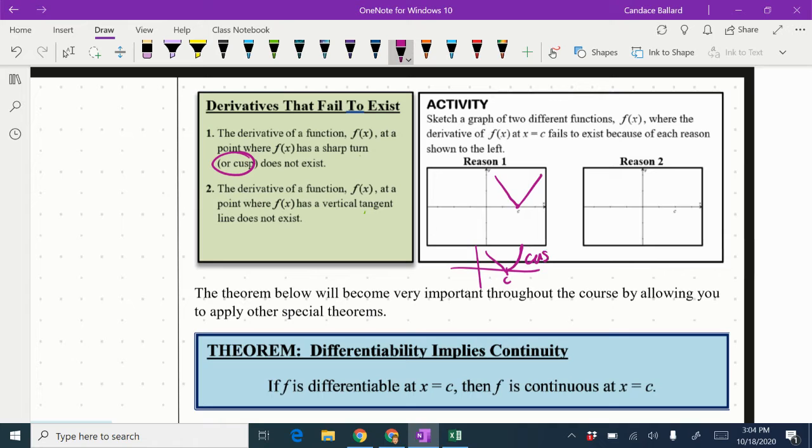This is more of a cusp, whereas this one is a corner. And then on the second graph here, it says we're supposed to draw one where we have a vertical tangent, and c is here. So I'm going to draw something that looks like that and like that, and that definitely has this vertical tangent line right in there.